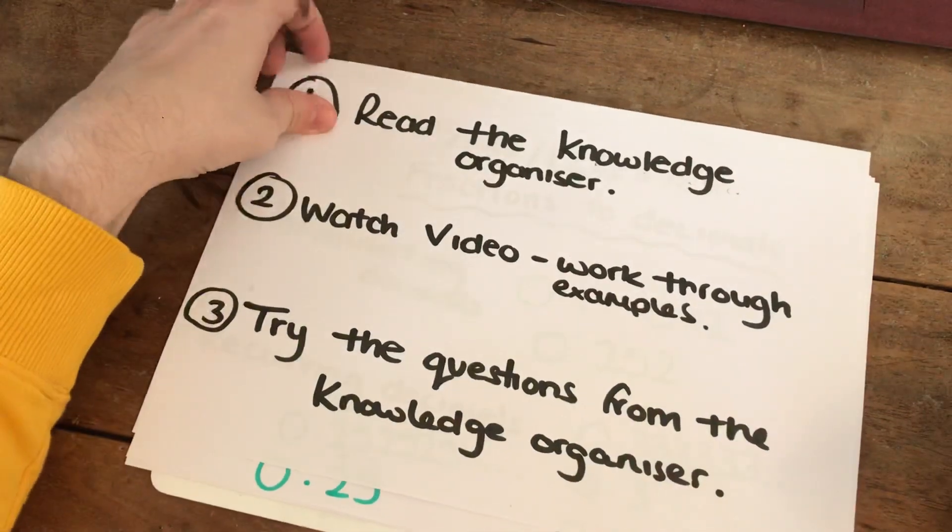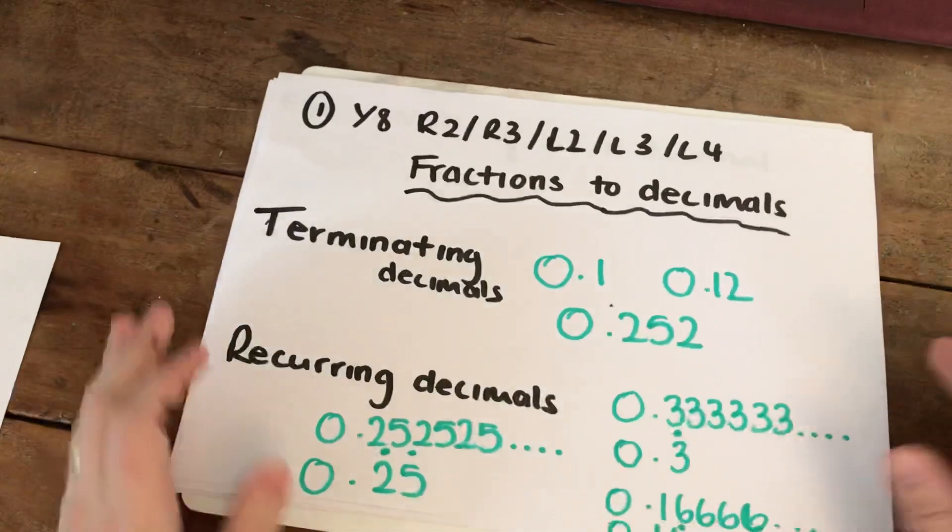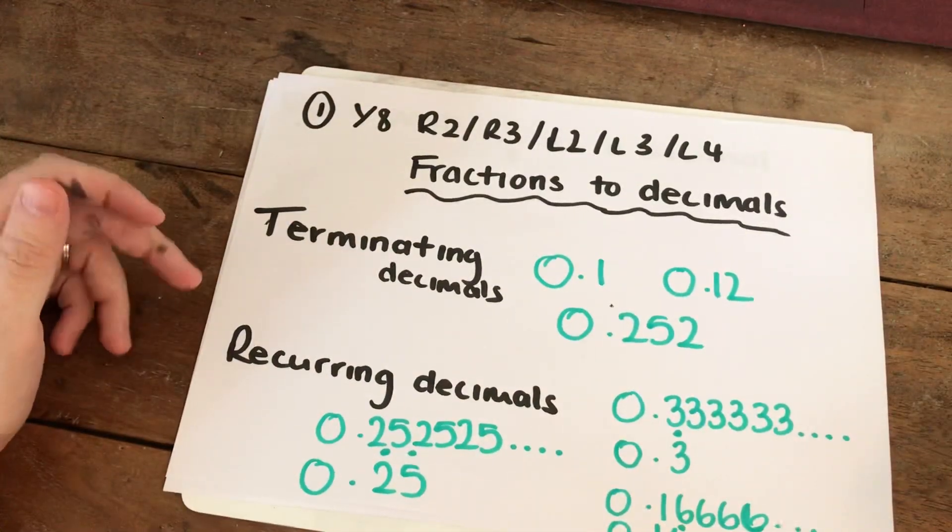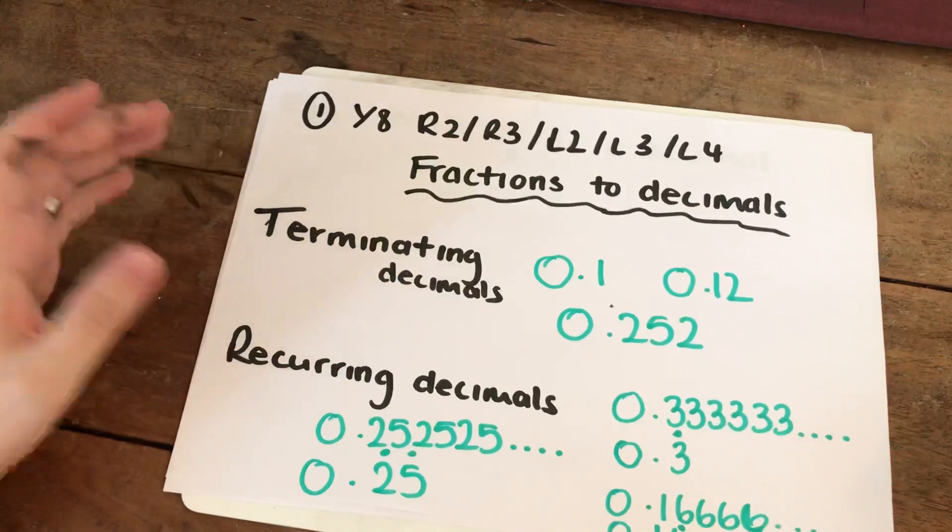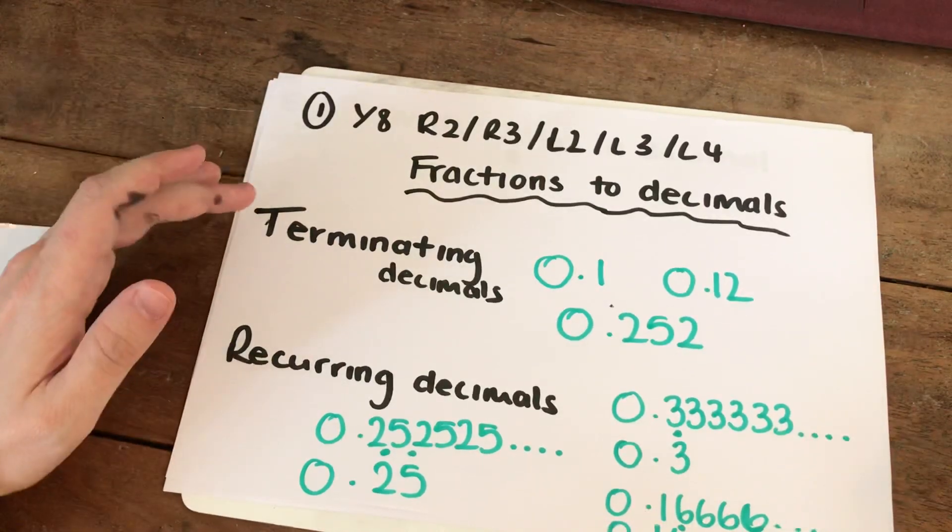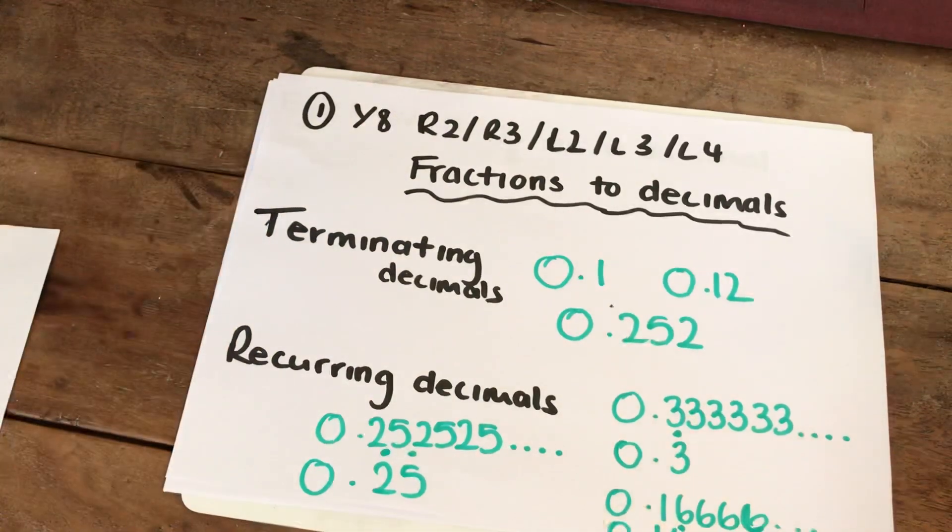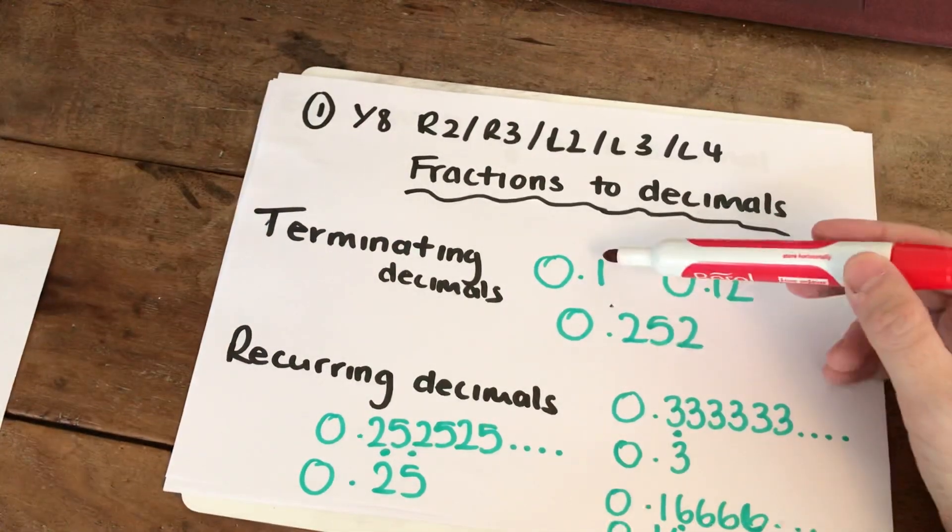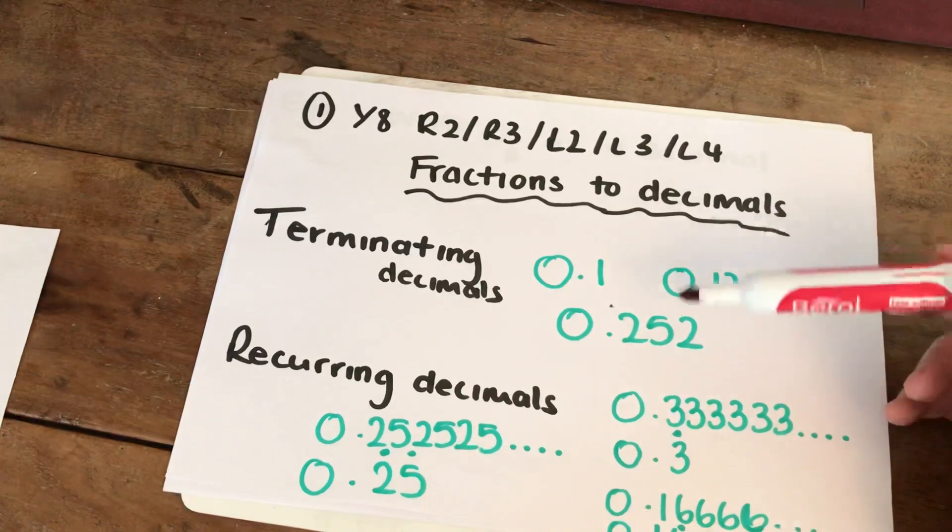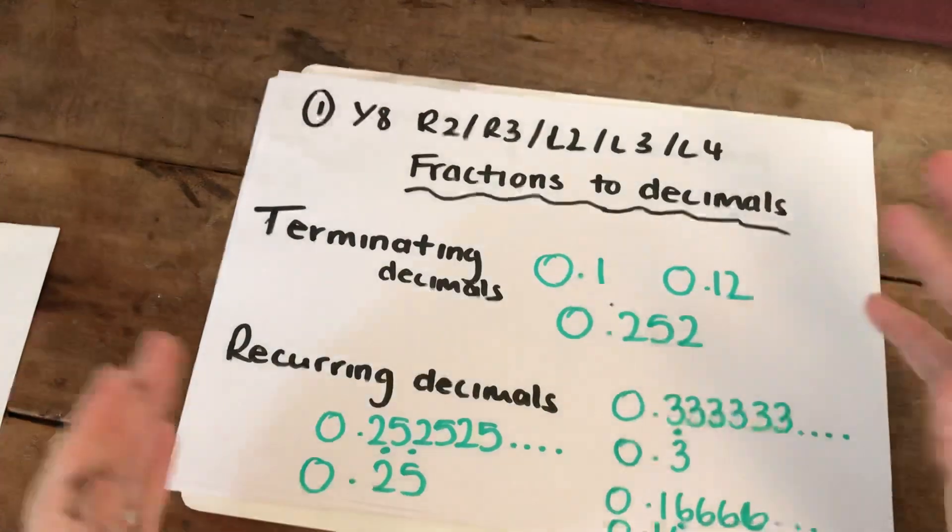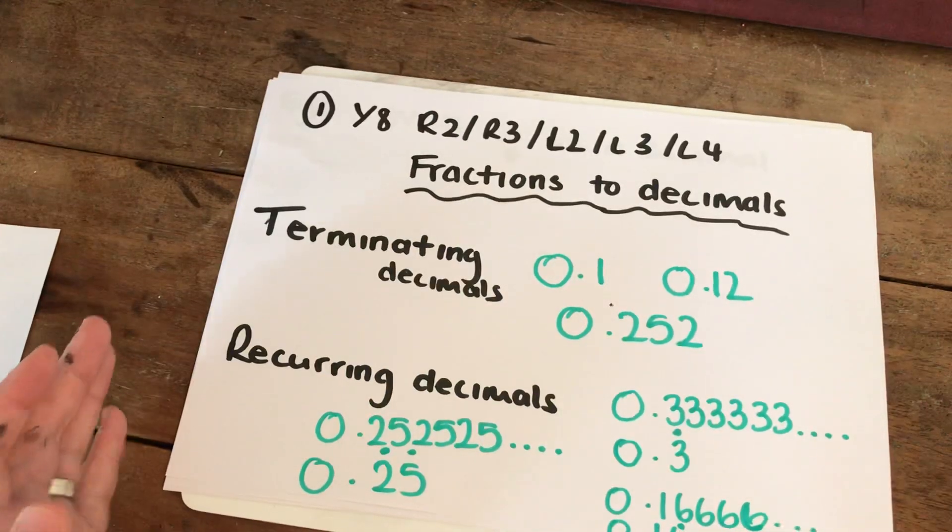The topic is fractions to decimals. You need to know two key facts. First, there are two types of decimals. The first type is terminating decimals. These can be ones such as 0.1, 0.12, or 0.252. These decimals end, which is why they're called terminating decimals.